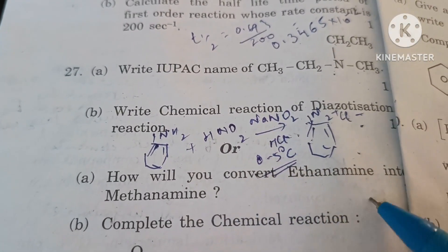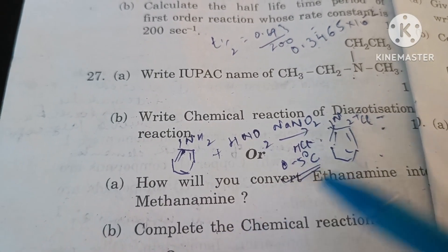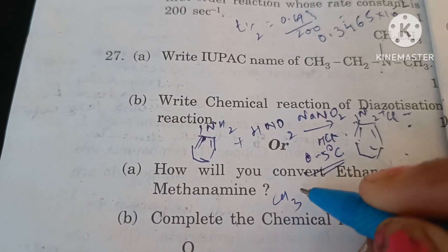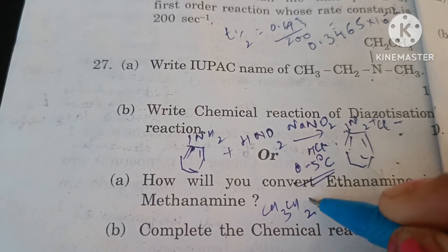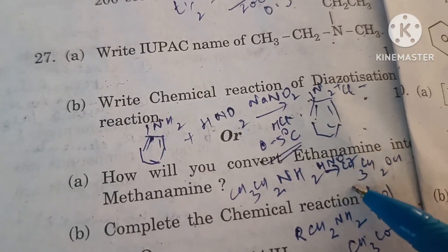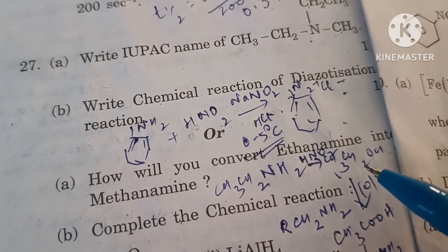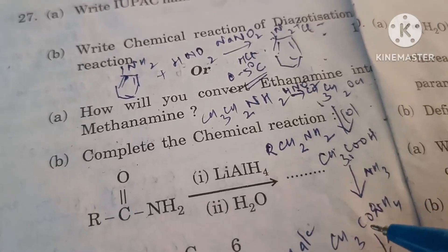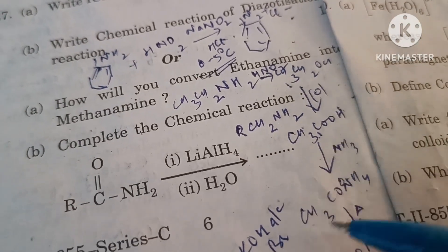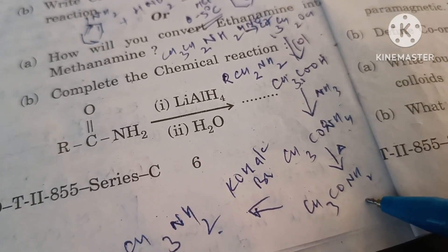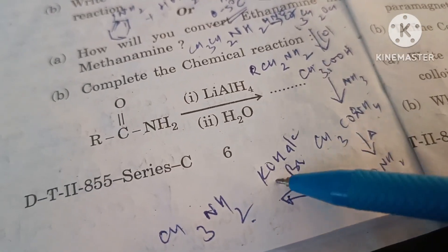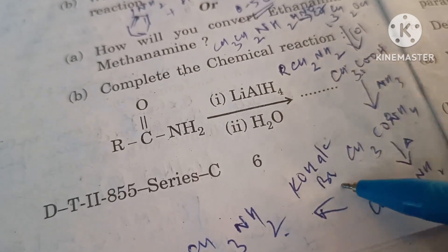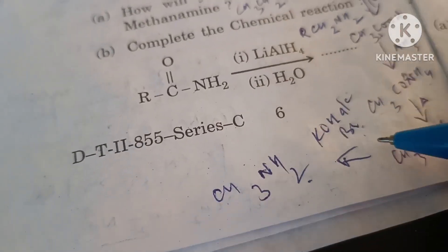How will you convert ethaneamine into methaneamine? We react ethaneamine CH₃CH₂NH₂ with nitrous acid to form ethyl alcohol, which on oxidation will form acetaldehyde, which on further oxidation will form acetic acid. When reacted with ammonia it forms ammonium acetate. On heating it gives acetamide which on Hofmann degradation reaction, bromine amide reaction, on reacting with alcoholic KOH and Br₂, it forms methaneamine.